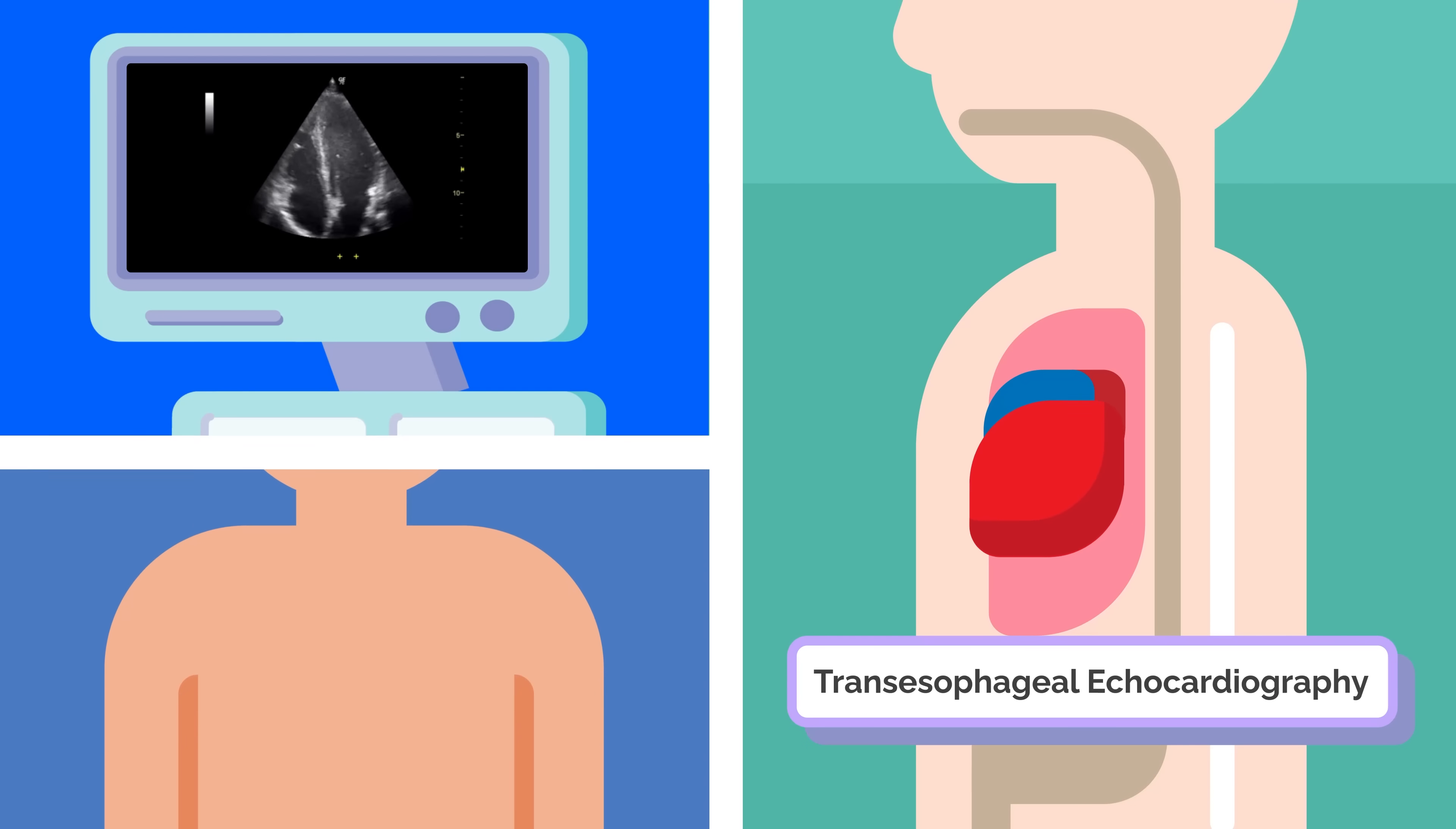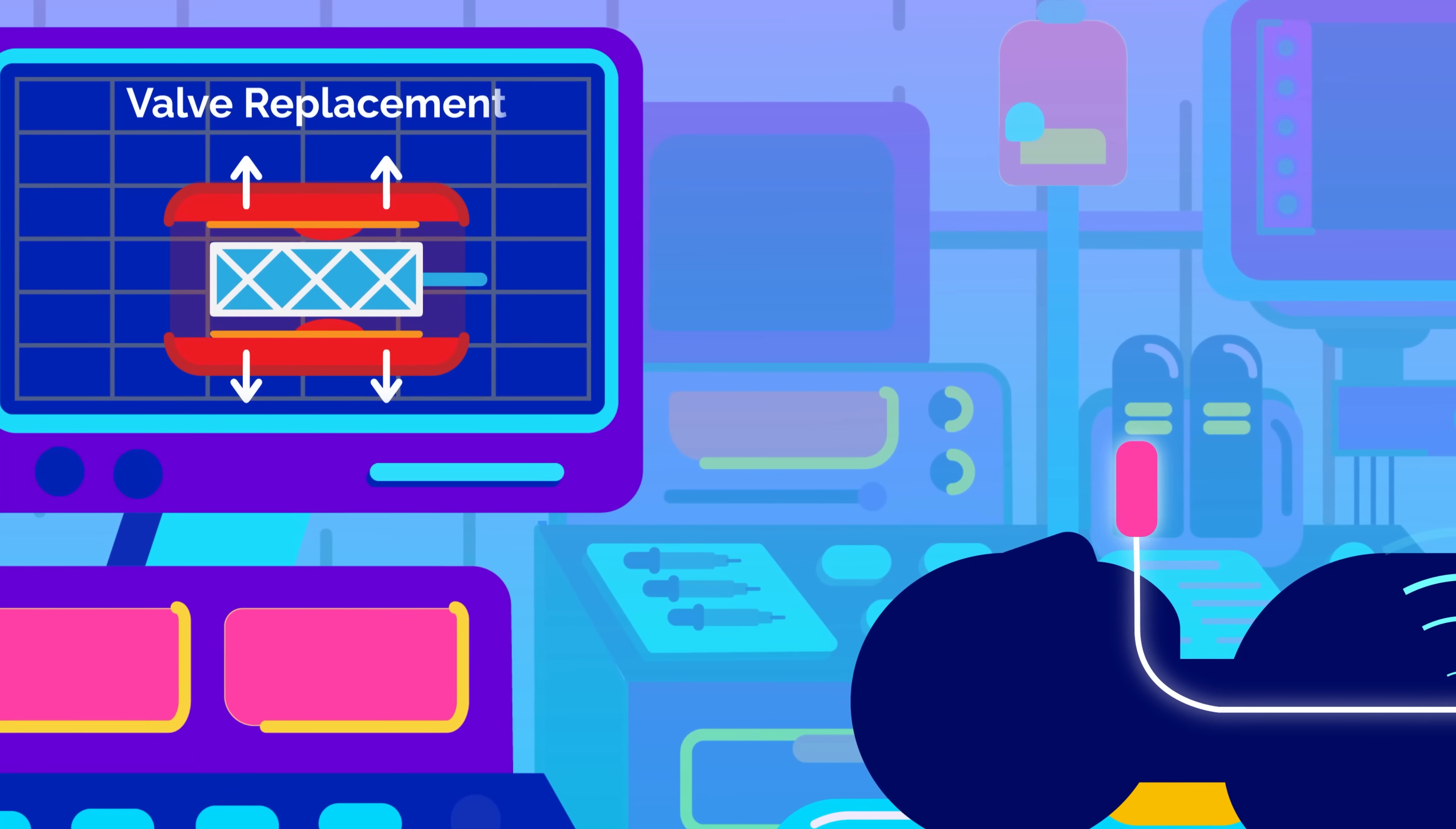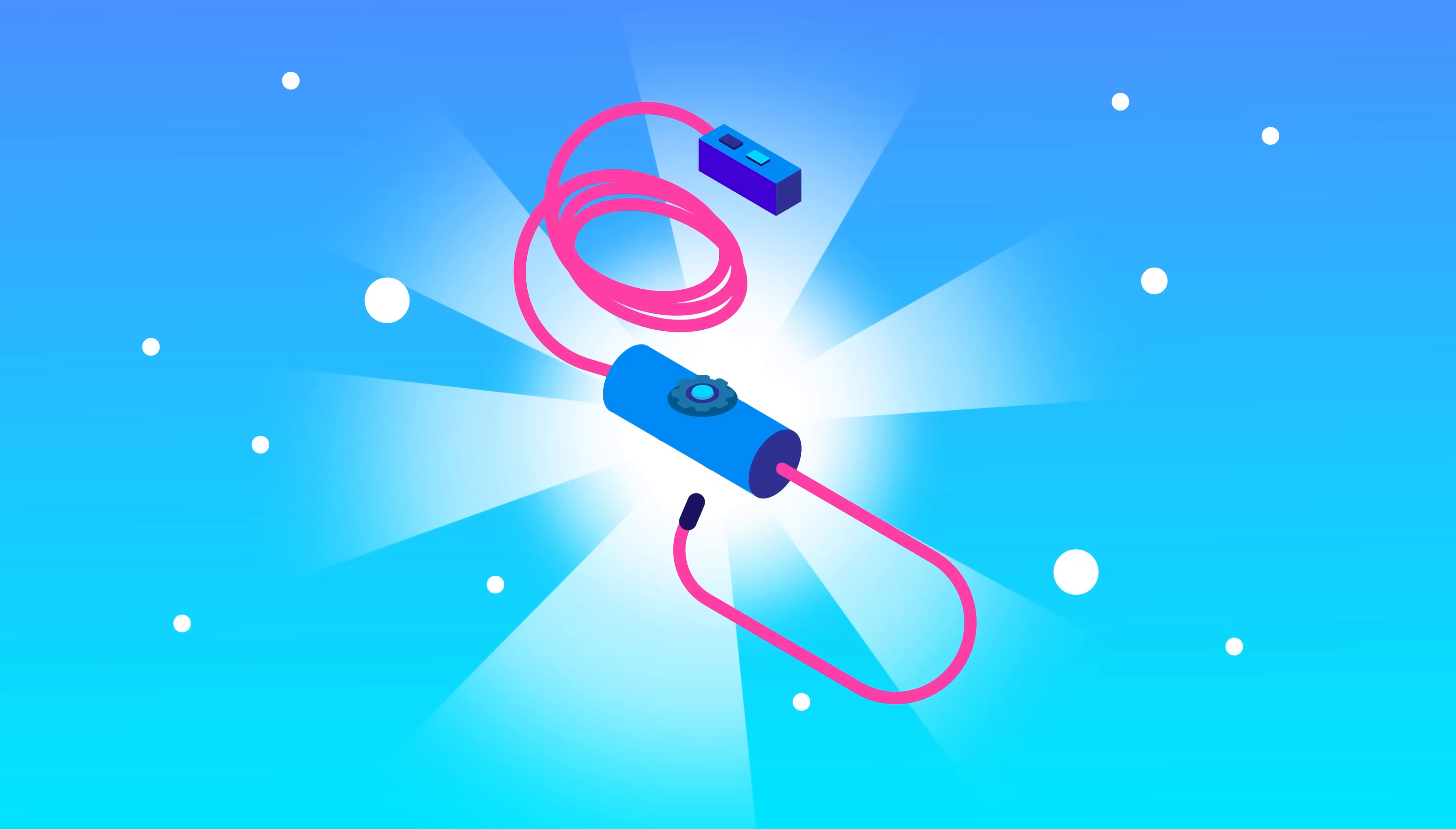But instead of placing the ultrasound probe directly on the patient's chest, the probe is carefully navigated into the patient's esophagus, providing a more detailed view of the heart while the surgeon is operating. This procedure is especially important in valve replacements or bypass surgeries, and mastering TEE is a big part of the fellowship. It's one of the key tools that make you essential in the OR for complex heart surgeries.